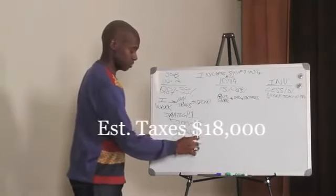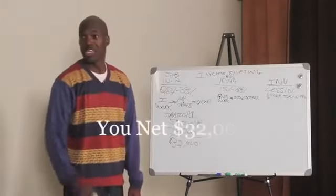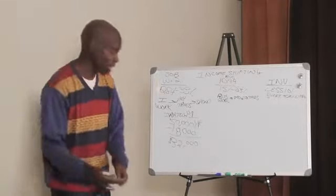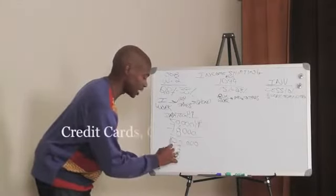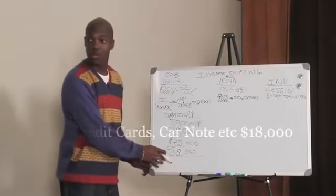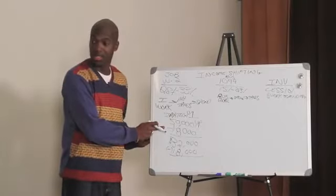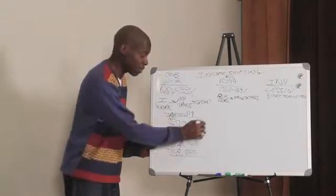Now because the government took $18,000, you go float the rest on a credit card. So you're trying to get your $50,000 back, but you borrowed it, and you know what you borrow you must pay back. So you gave $18,000 to the government, you gave another $18,000 to the banks.